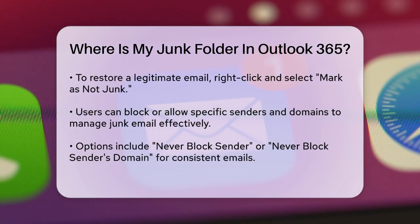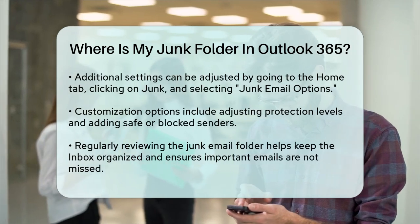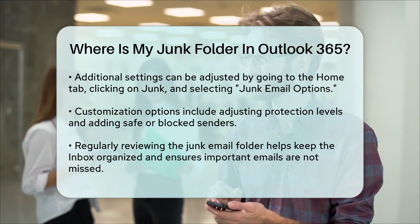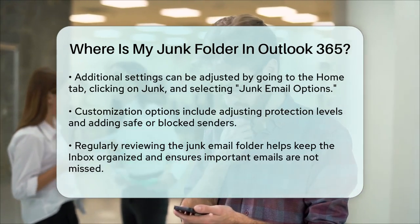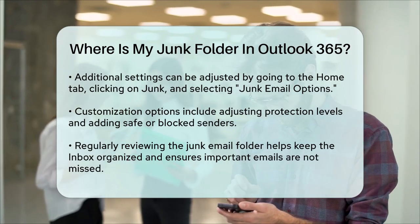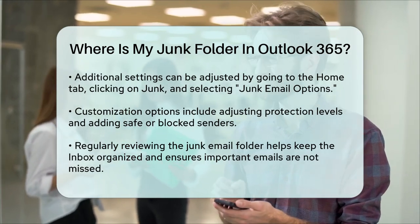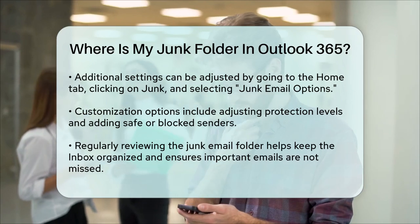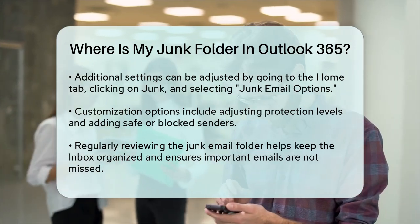To ensure those emails go directly to your inbox in the future, and to manage your junk email settings further, you can go to the Home tab in the Outlook desktop application, click on Junk, and then select Junk Email Options. Here, you can adjust the protection level and add safe senders and blocked senders to customize how Outlook handles your emails.